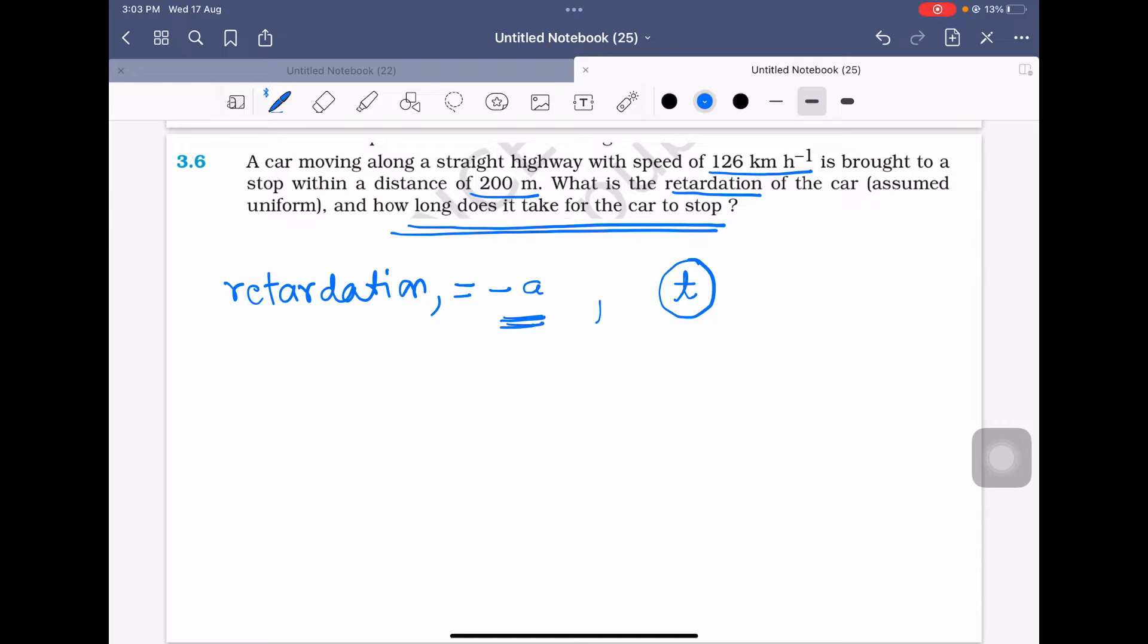So what is given. Initial velocity is 126 km per hour. We will convert this into meters per second. 126 times 5 by 18. 18 goes 7 times in 126. 7 times 5 is 35 meters per second.